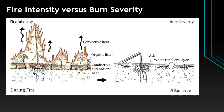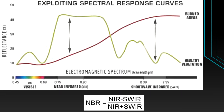Burn severity within a region may vary — it depends on the ecosystem and varies from one ecosystem to another. For example, if a barren area with small grass is burned, it will not be as severe as an area with large trees. Burn severity will of course be more in more vegetated areas.